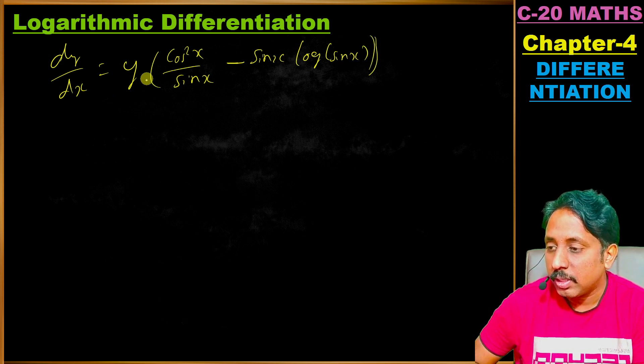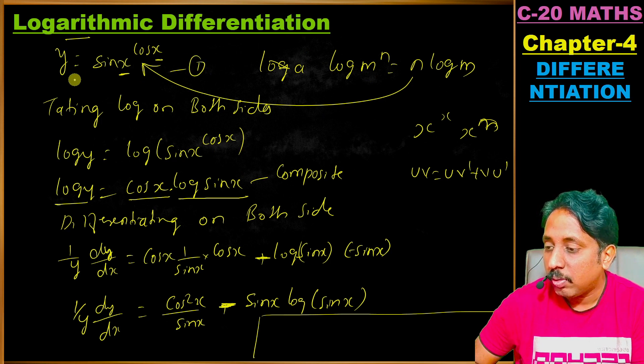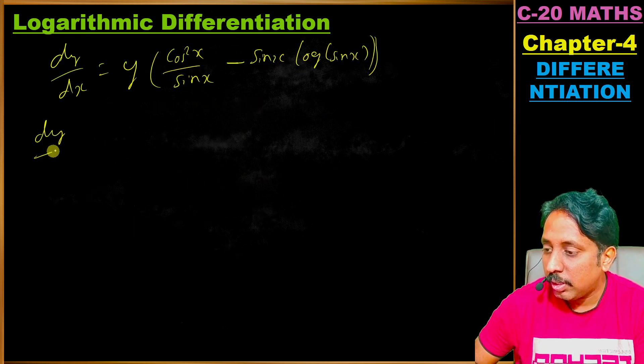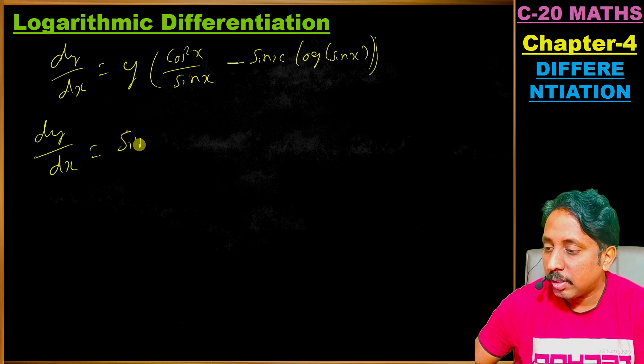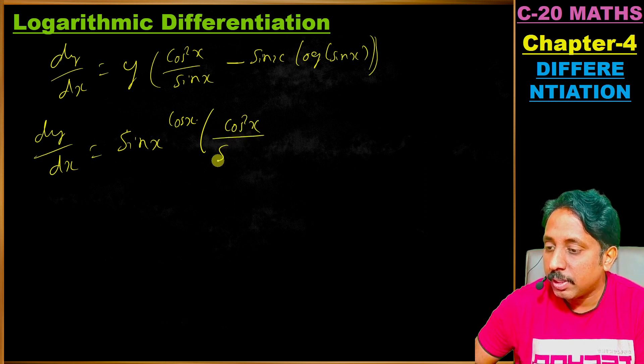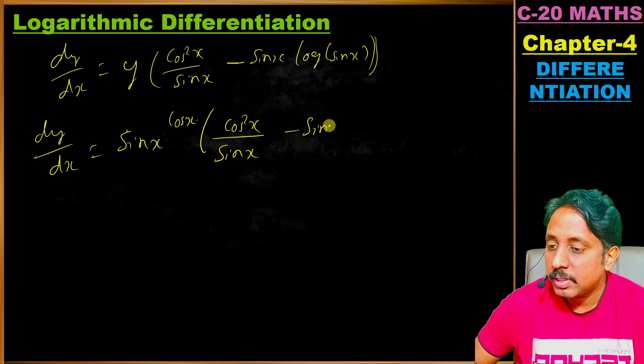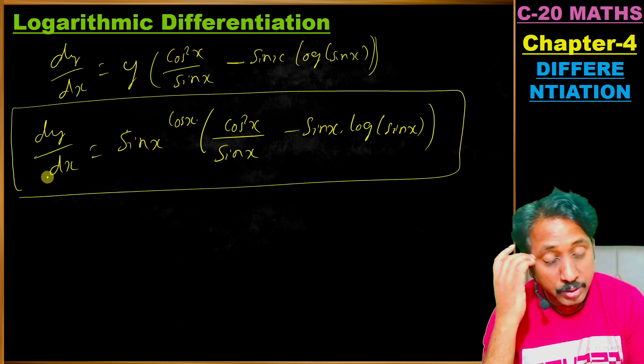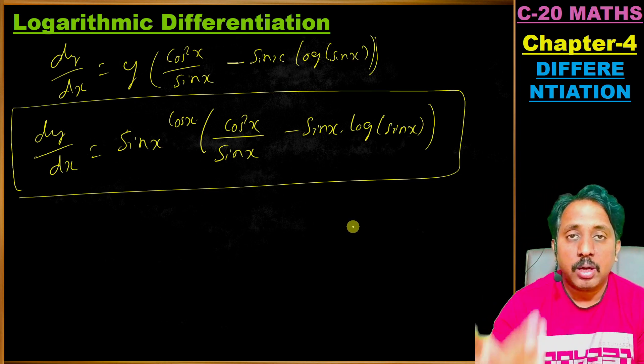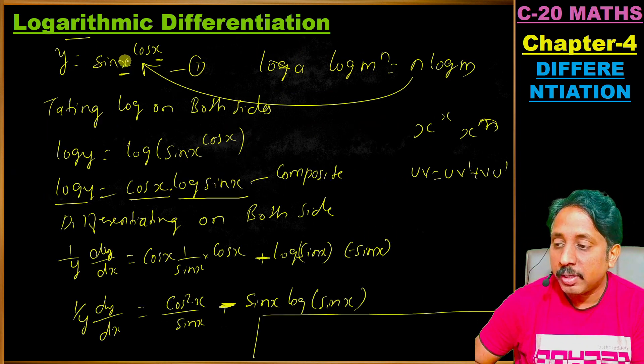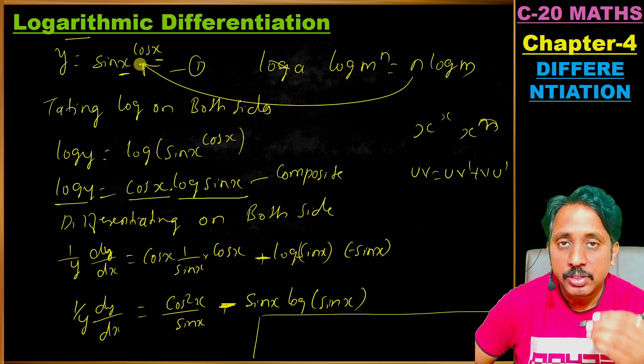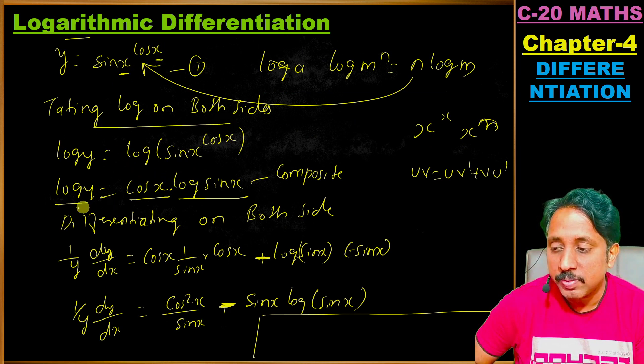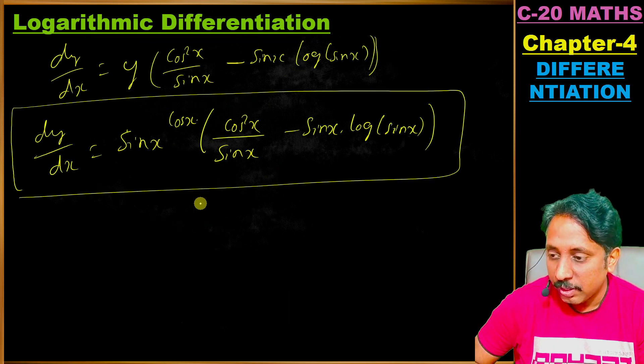So this is the final answer. The first step is taking log on both sides when you have power to power or function to the function power. The second step is differentiating on both sides, then simplification.